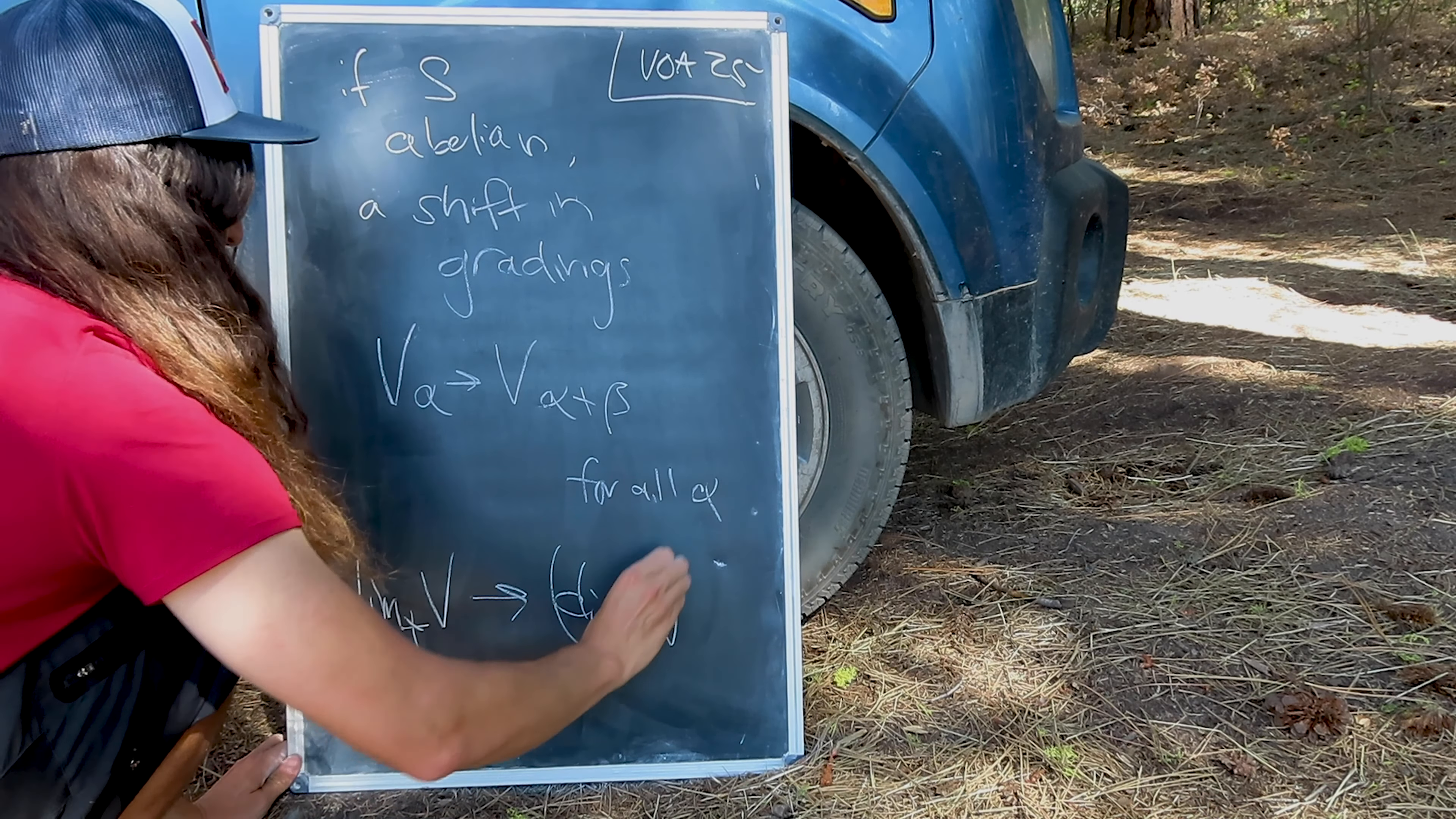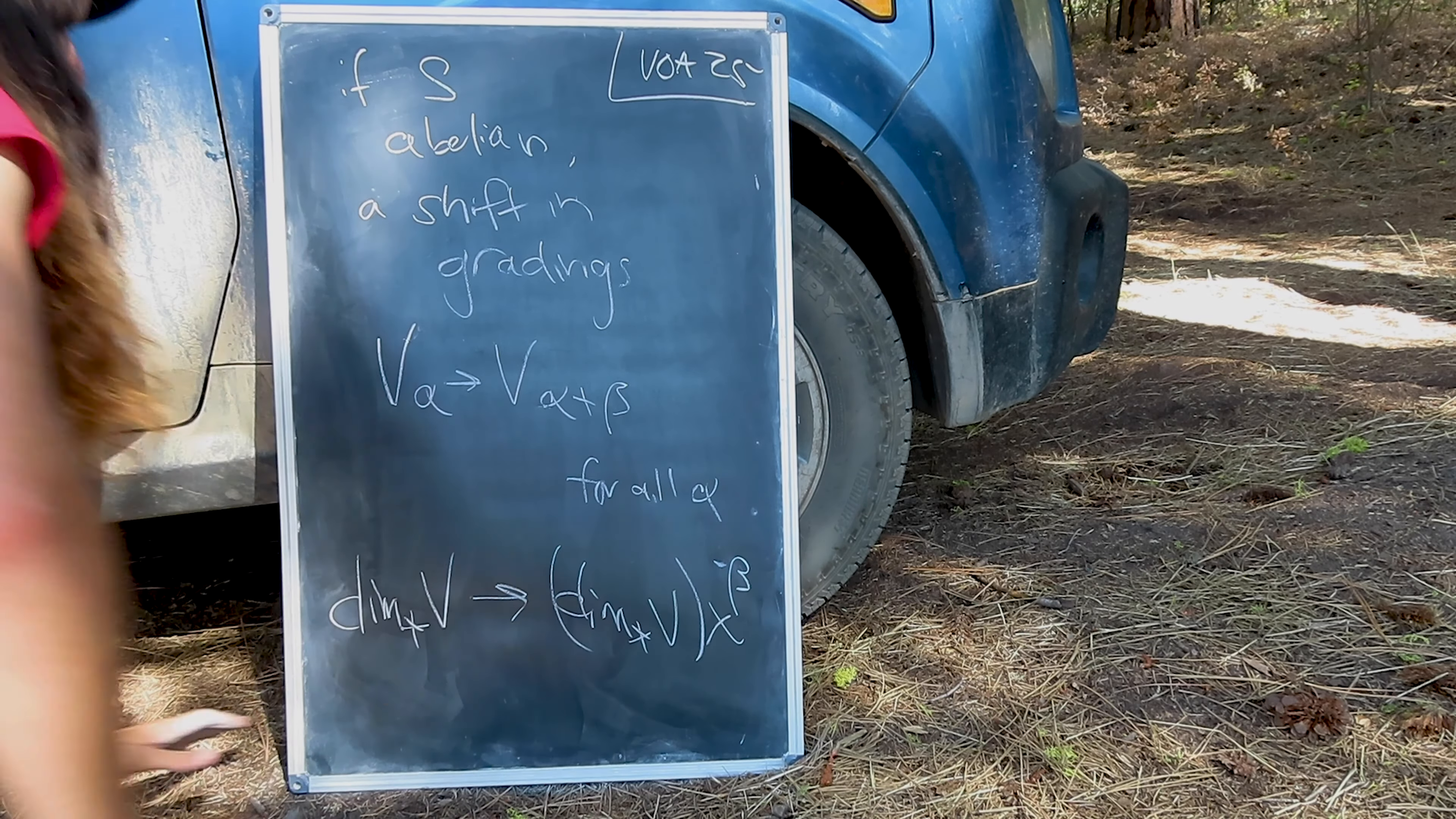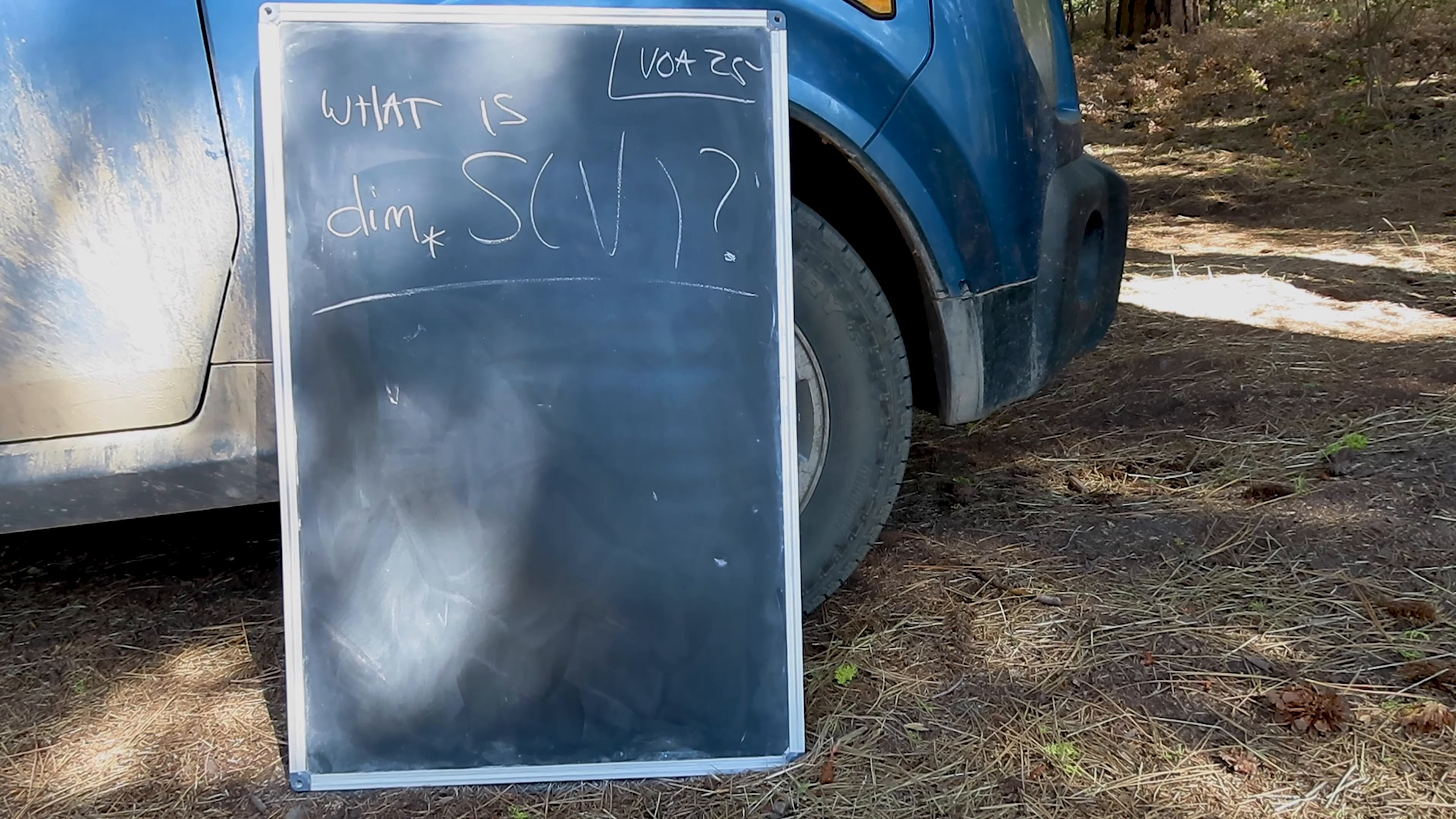Again, if S is abelian, you may recall that we can shift the grading at will by a fixed element beta. For such a shift, the graded dimension is scaled by x to the beta. This is exactly the kind of shift that we saw in lecture last time.